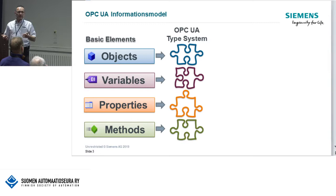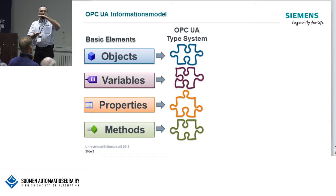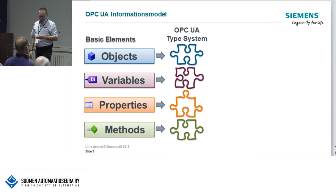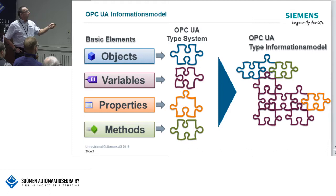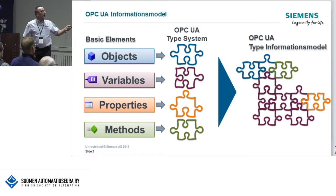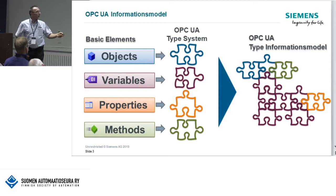The OPC UA type system is like a class in a programming language — a class is a description of the implementation: what can you expect if you use it, or what do you need to implement for it. The type system and also the instance system in OPC UA are like puzzle pieces: you can have your objects, methods, different variables, and of course some properties. This is your whole class definition in OPC UA.